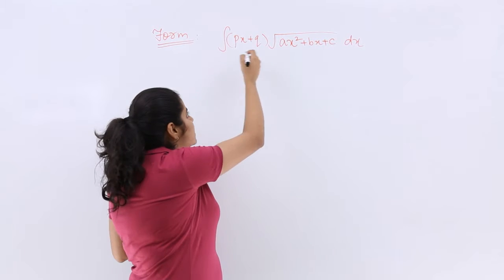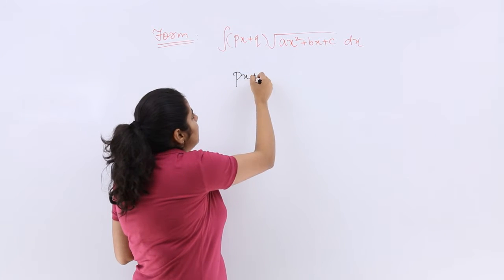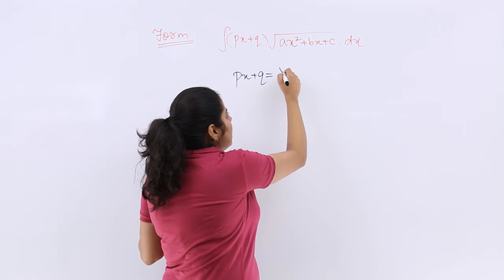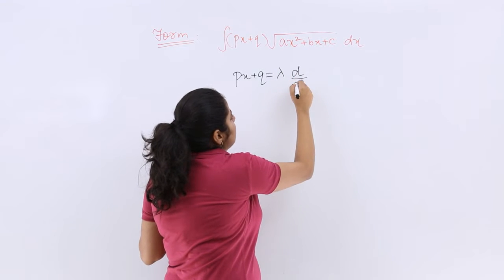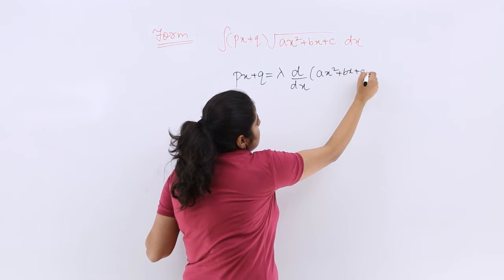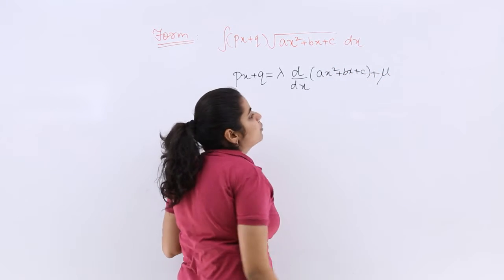What we will do is we will express this outside thing in the form such that it is lambda times the derivative of inside, that means ax square plus bx plus c, plus another mu.